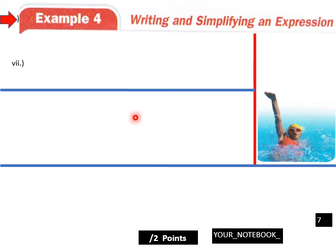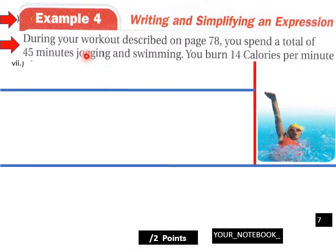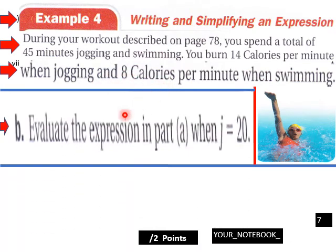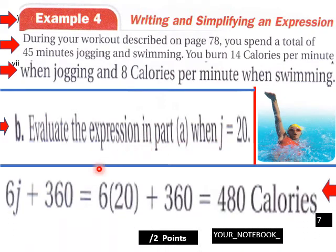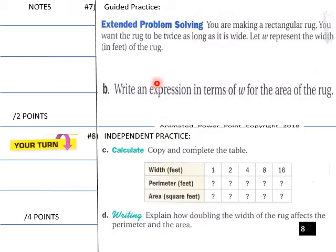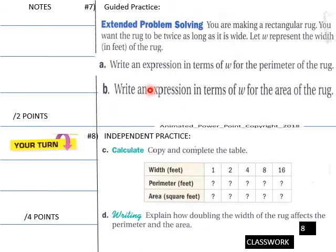Now for part B: evaluate the expression in part A when J equals 20. We now have a jogging session of 20 minutes, so we plug it into our expression to show how many calories we burn. Starting with 6J plus 360, we get 6 times 20 plus 360, which equals 480 calories burned when jogging 20 minutes.